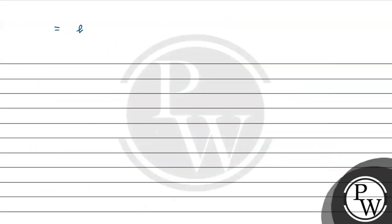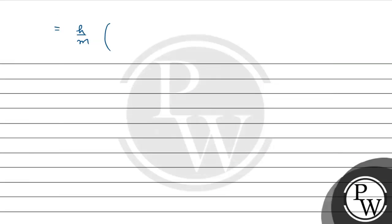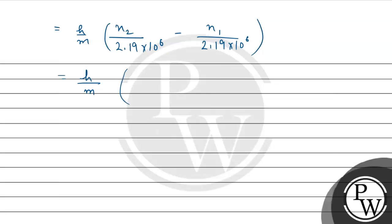We will substitute into our formula: delta lambda = H/M × [N2/(2.19 × 10⁶) − N1/(2.19 × 10⁶)]. For hydrogen, the atomic number Z equals 1, so the velocity simplifies to 2.19 × 10⁶ / N. Taking the LCM, delta lambda = (H/M) × (N2 − N1) / (2.19 × 10⁶).